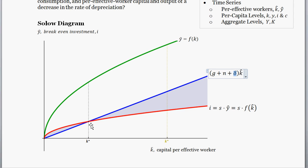Everything's in its balanced growth path — output is growing at the growth rate of technology plus the growth rate of population, and all per capita levels are growing at the growth rate of technology. Everything is in its nice balanced state. The question is: how do things change when we change this depreciation rate?